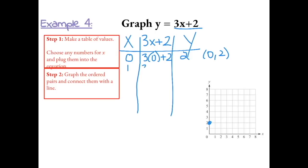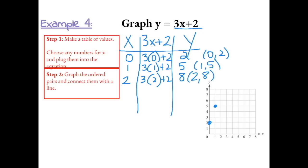Next, plugging in 1: 3 times 1 plus 2 gives us 3 plus 2, which is 5. So our next ordered pair is (1, 5). Next, plugging in 2: 3 times 2 plus 2 gives us 6 plus 2, which is 8. So that ordered pair is (2, 8). Now we can use the line to connect the graph, and I do see that it's a straight line, so this is a linear equation.